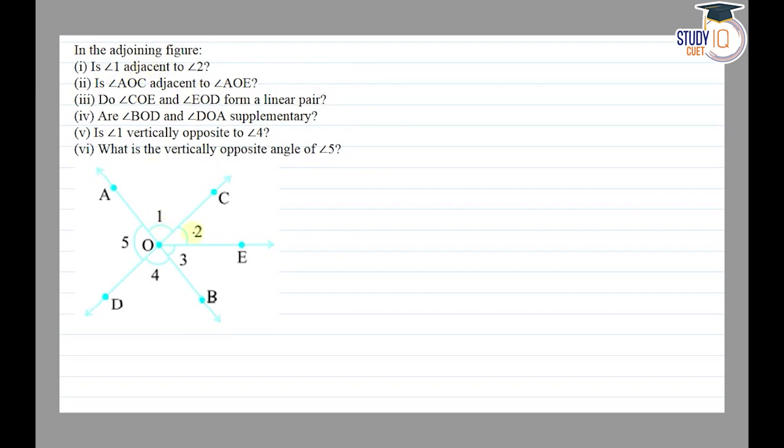So angle 1 and angle 2. The adjacent angle is the angle where we have a common vertex, one arm is common. Let's check first. So angle 1 and 2, the common vertex is O, the common arm is OC, and the non-common arms are on both sides of the common arm. So OA is on the left-hand side and OE is on the right-hand side of the common arm. So adjacent angle, yes, angle 1 and angle 2 are adjacent to each other.